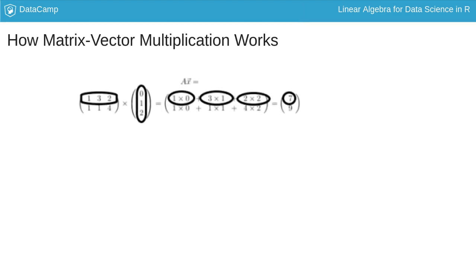Here's an example of a two by three matrix multiplied by a vector with three elements making a vector with two elements.